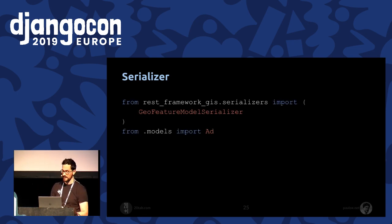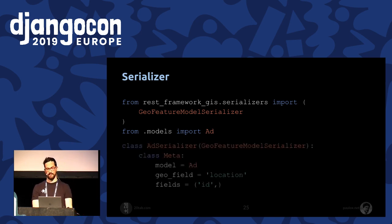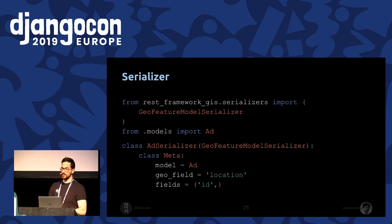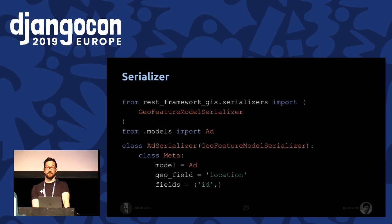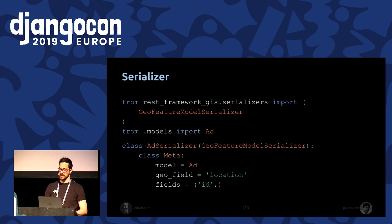The first step to build our RESTful API is to write a serializer. We inherited it from GeoFeatureModelSerializer, imported from Django REST Framework GIS. In order to define our serializer, we had to specify the model, the GeoField in our model, and the additional fields we want to include in the final GeoJSON result.